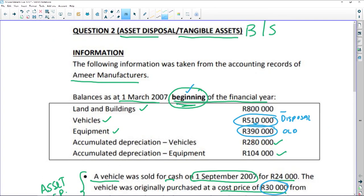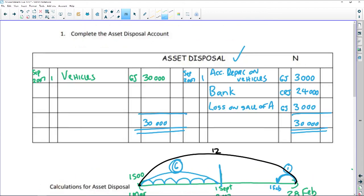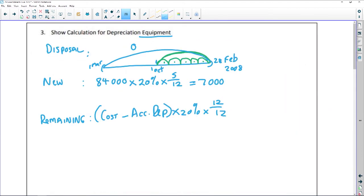Let's go back to our info very quickly. At the beginning of the year, equipment cost was 390,000 and my accumulated depreciation on equipment was 104,000.